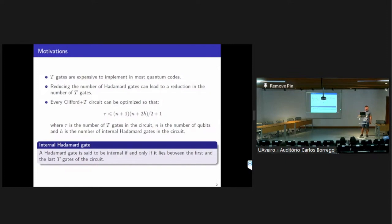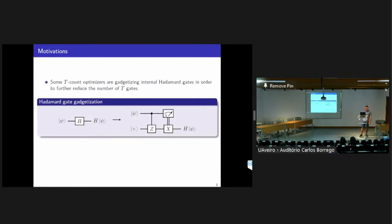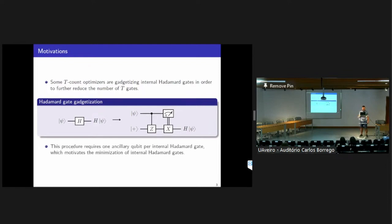A Hadamard gate is said to be internal if it is between the first and the last T gates of the circuit. So if we lower the number of internal Hadamard gates, this upper bound will be lower and we can expect better optimization in the number of T gates. Some T-count optimizers use a measurement-based gadget to substitute the internal Hadamard gates in the circuit, and to better optimize the number of T gates. These two circuits are equivalent, but in the second circuit we don't have any Hadamard gates — instead we have a CZ gate and a measurement. The problem is that we need one ancillary qubit for each internal Hadamard gate that is gadgetized, so we want to minimize the number of internal Hadamard gates.